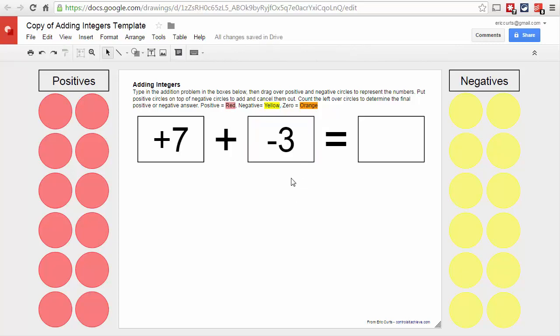All right. And so what we're going to do now is we're going to represent the positive seven and the negative three by using these colored circles. As you can see, positives are red, negatives are yellow. So I'm going to need to drag over seven positive circles, and then three of the negative circles, so seven reds and three yellows.